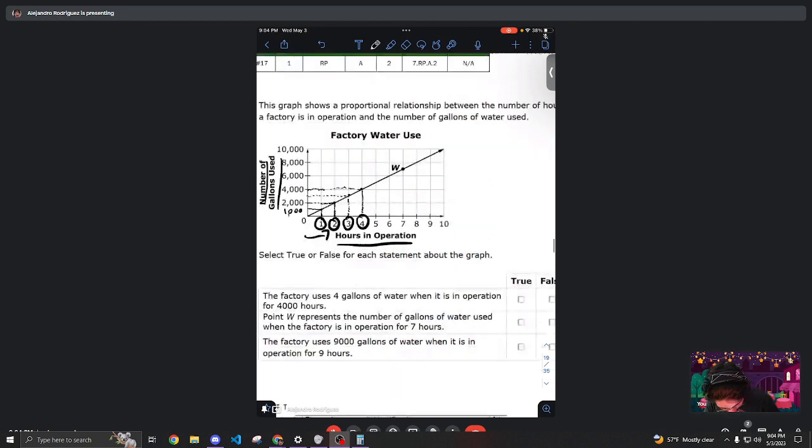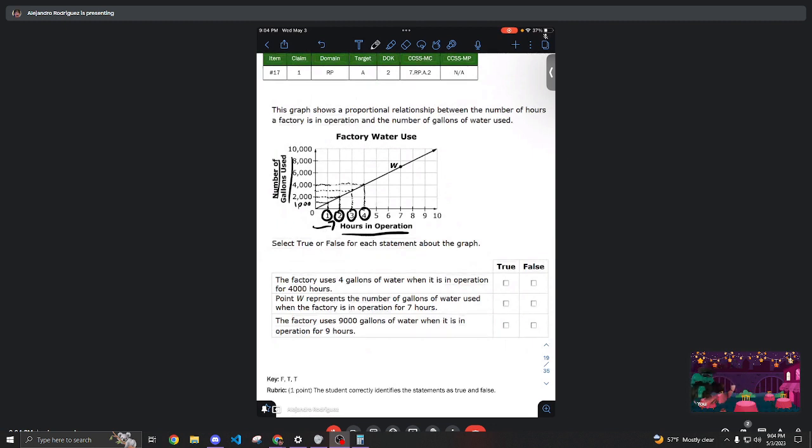And it wants us to answer the following statements, whether they're true or false. So the first one is: the factory is gonna use four gallons of water when in operation for four thousand hours. This is definitely false because, look at this—in one hour, we're already gonna use one thousand gallons of water.